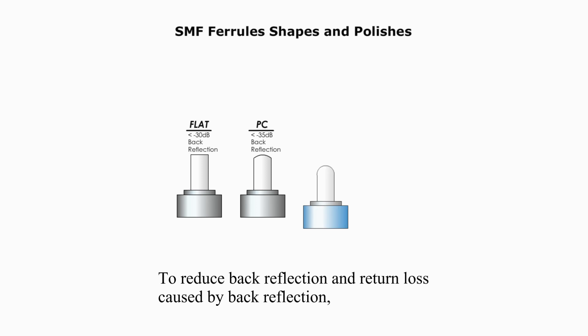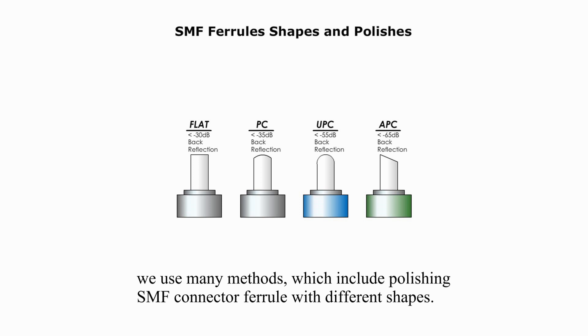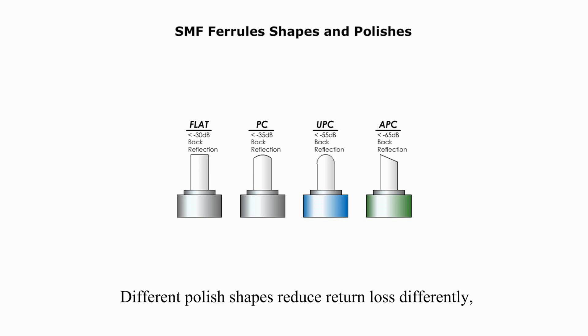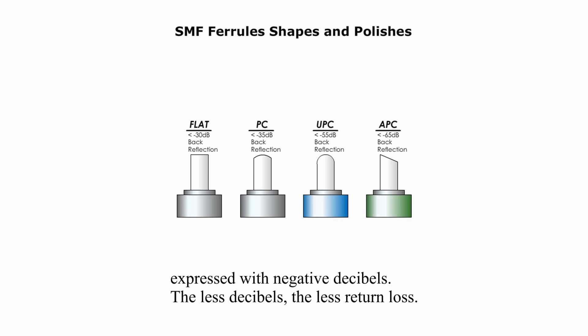In order to reduce the back reflection and return loss caused by back reflection, we use many methods which include polishing single-mode fiber connector ferrule with different shapes. Different polished shapes reduce return loss differently expressed with negative decibels. The less decibels, the less return loss.